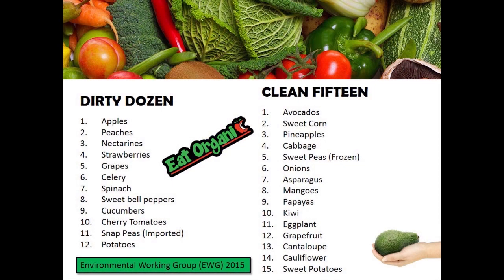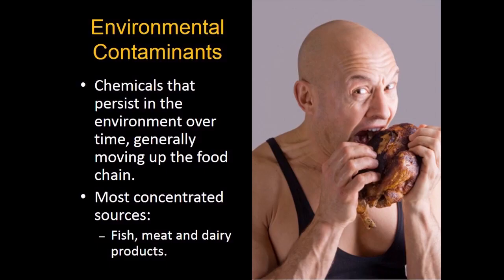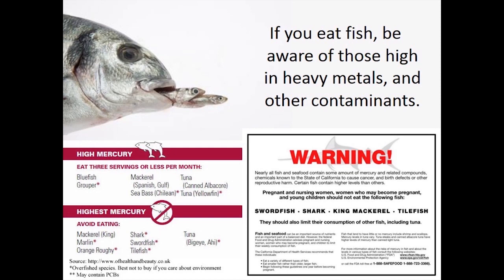We want to use foods without excessive packaging — use jars instead of cans, or use BPA-free packaging materials. Where environmental contaminants are concerned, these chemicals move up the food chain and are very concentrated in animal products like fish, meat, and dairy products, so we need to eat lower on the food chain. People who eat fish need to be very aware of pollutants like dioxins and heavy metals, and there are many online resources that explain where these are concentrated.